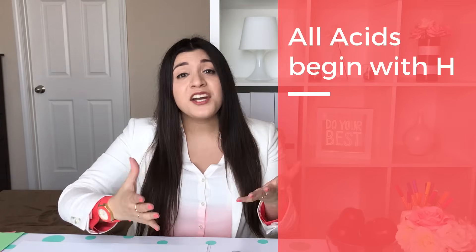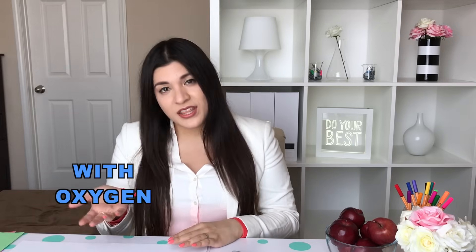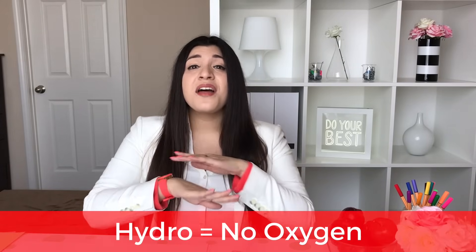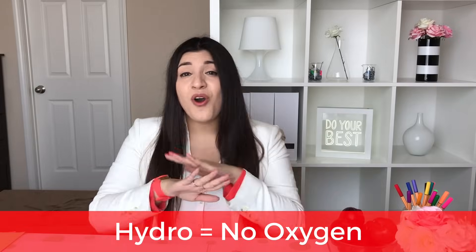All acids begin with H, or a hydrogen, in front — that is your clue that it is an acid. There are two specific types of acids: ones with oxygen and ones without oxygen. The ones without oxygen begin with a prefix of hydro. That hydro is your clue that there is no oxygen.